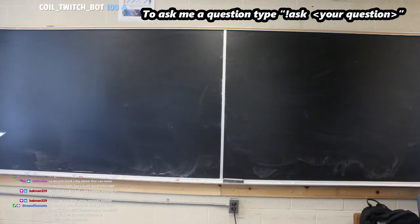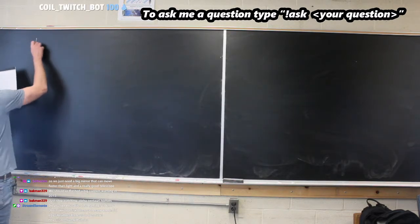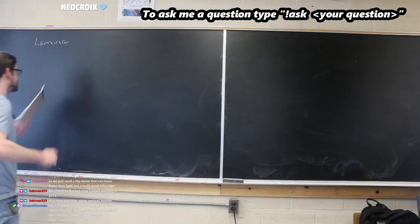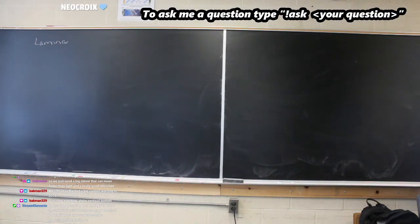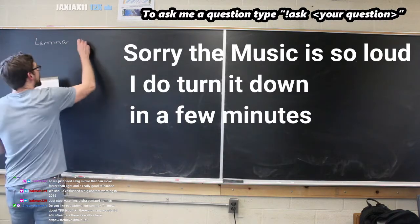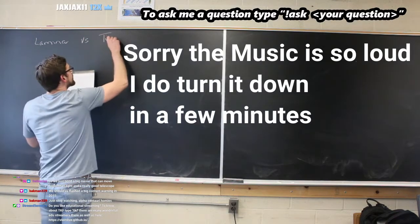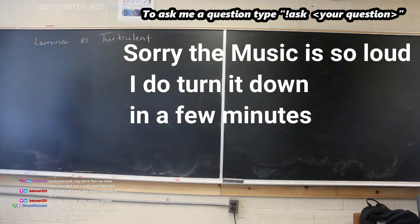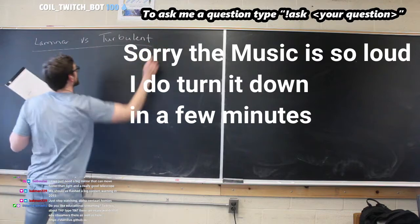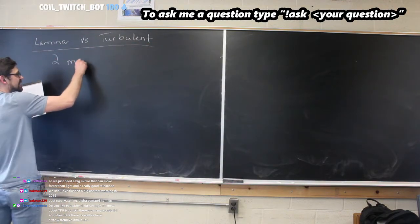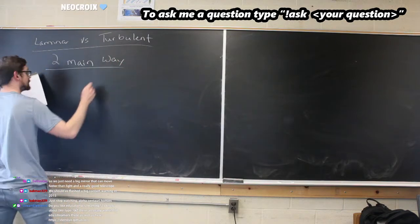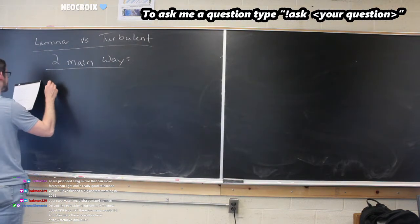I just have some notes. This is nothing remarkably in-depth — we're not going to talk heavily about all the different things with turbulent flow and all the different equations, but we want to outline two major ways to talk about laminar versus turbulent. We'll start with the easier one, which is the Reynolds number.